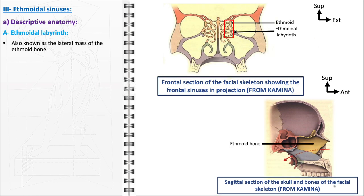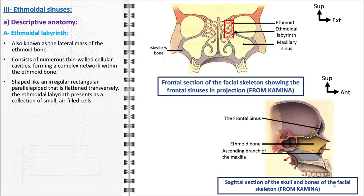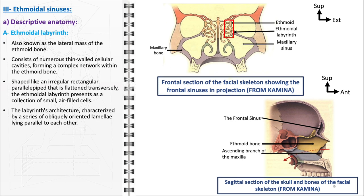Central to these sinuses is the ethmoidal labyrinth, also known as the lateral mass of the ethmoid bone. This structure is composed of numerous thin-walled cellular cavities that form an intricate network within the ethmoid bone, playing a crucial role in both the structural and functional anatomy of the nasal and orbital regions. The ethmoidal labyrinth is uniquely shaped like an irregular rectangular parallelepiped, flat and transverse. This shape is characterized by a collection of small air-filled cells with significant physiological functions, including the filtration and humidification of inhaled air. Its architecture is further defined by obliquely oriented lamellae lying parallel to each other.